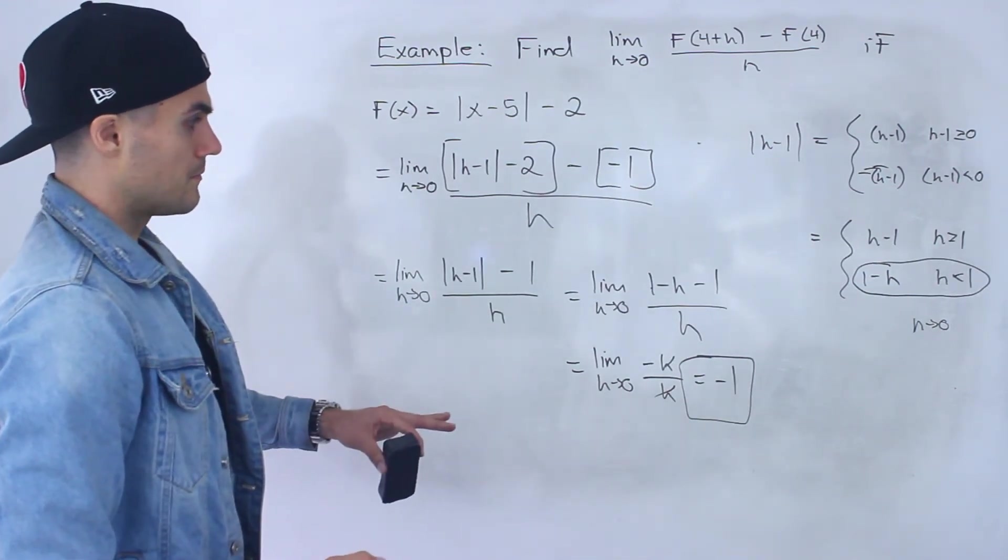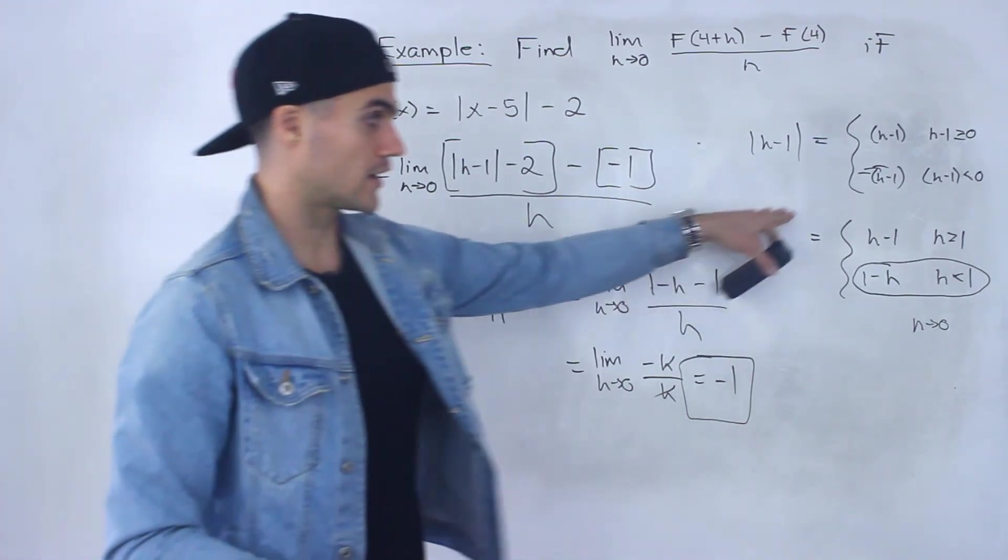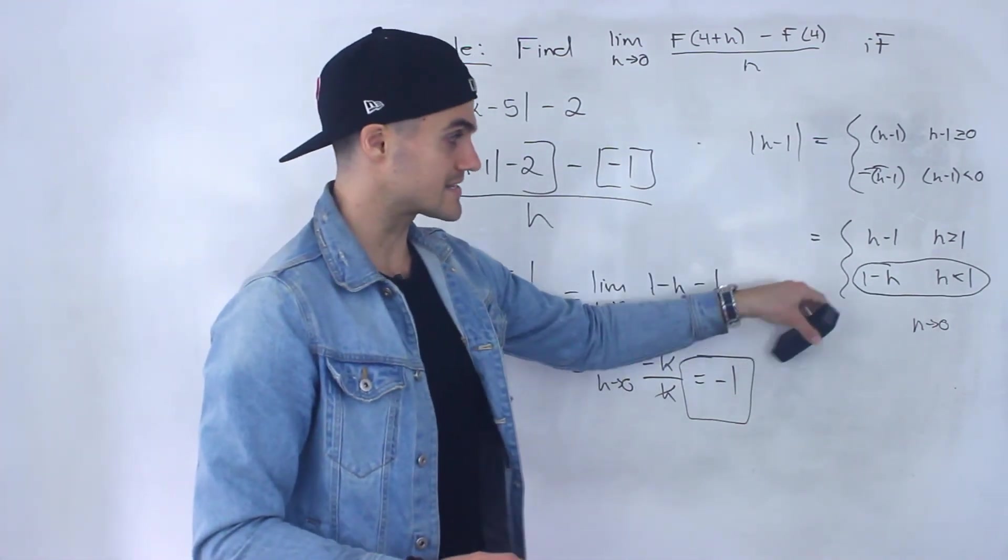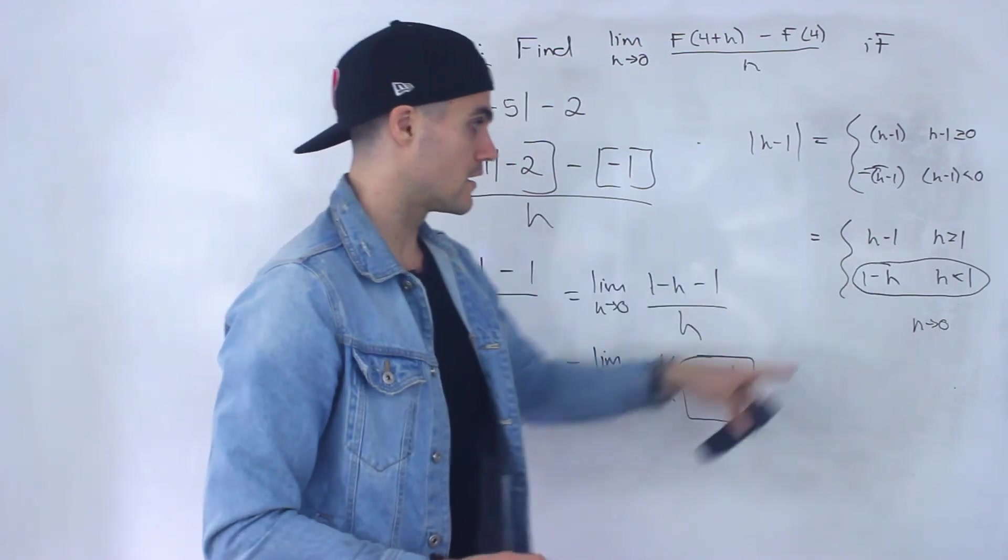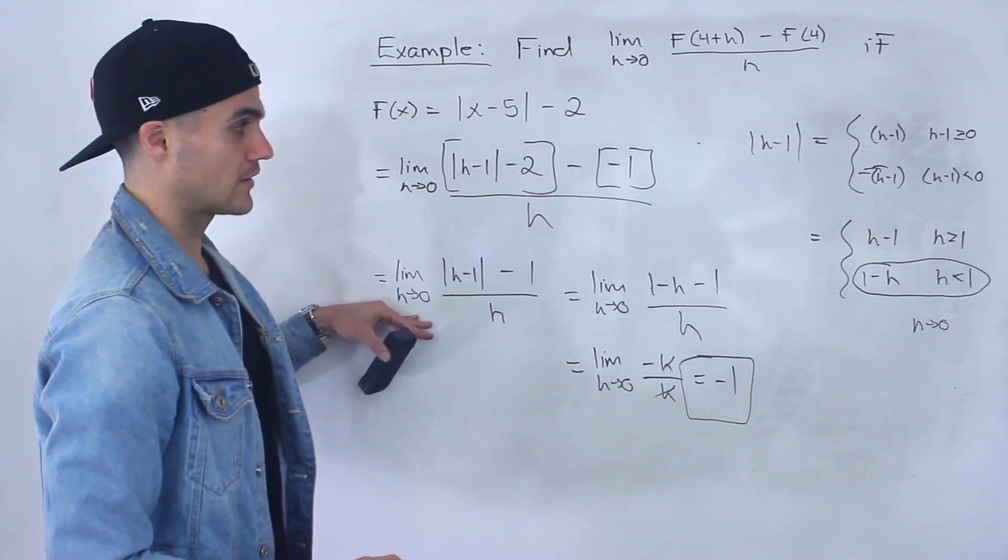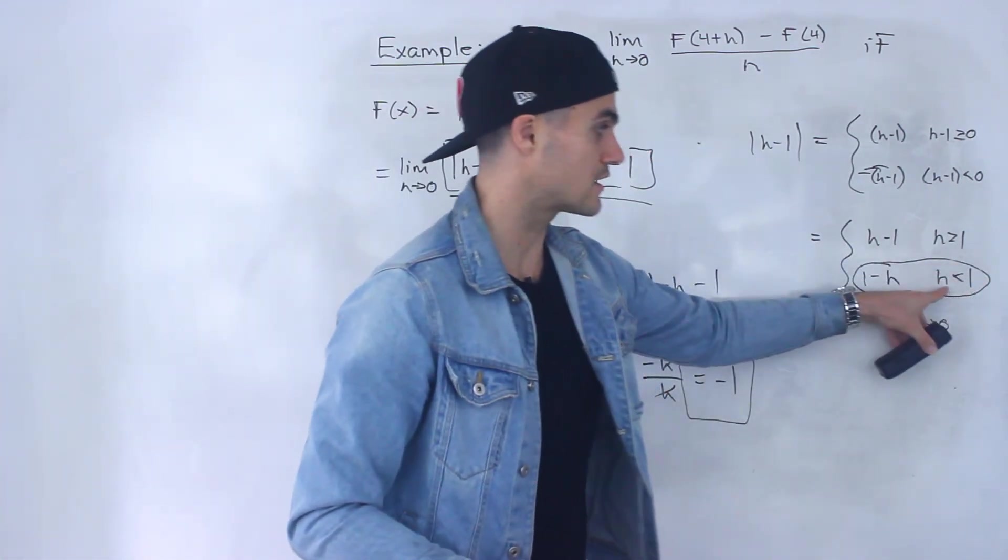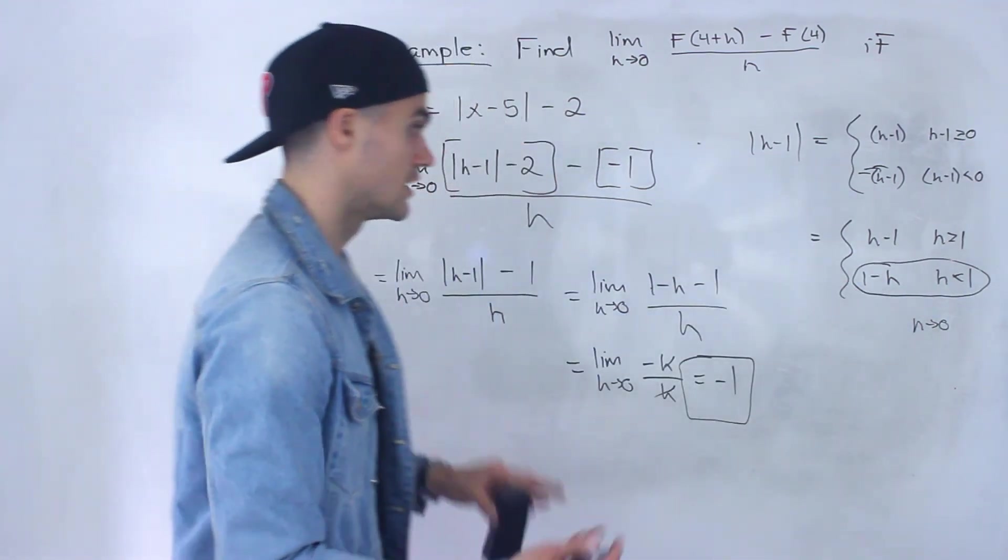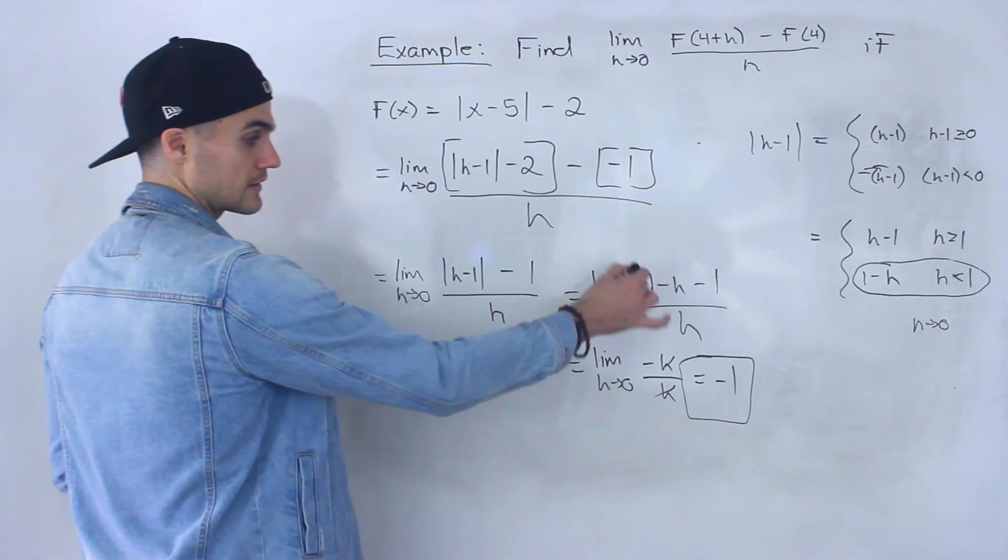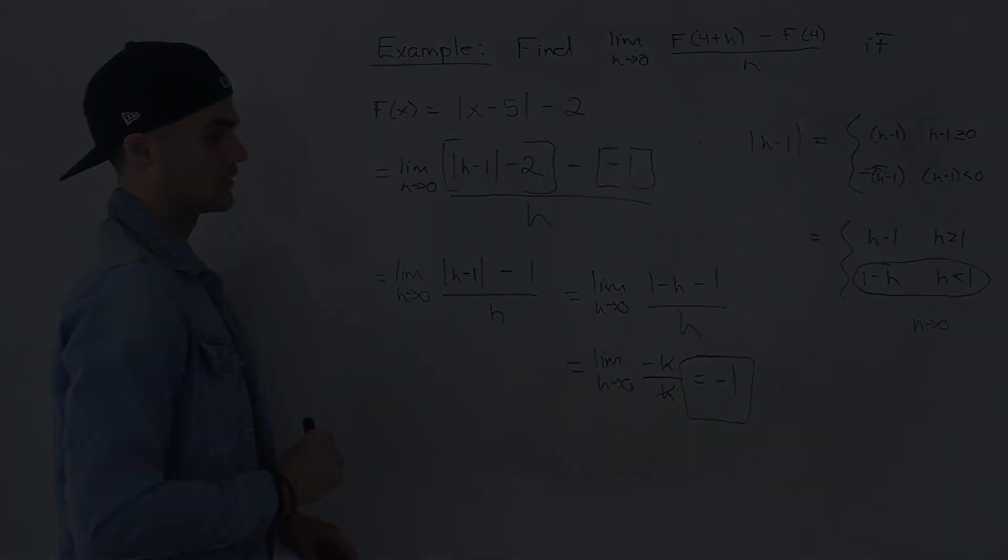So we took this absolute value, converted it to a piecewise function, and then subbed in the proper piece for whatever h value we're approaching. We're approaching 0 in this case, and 0 falls within this interval when h is less than 1. So this function would be defined by this expression on that interval. So we plugged that in, simplified everything, and we end up getting -1.